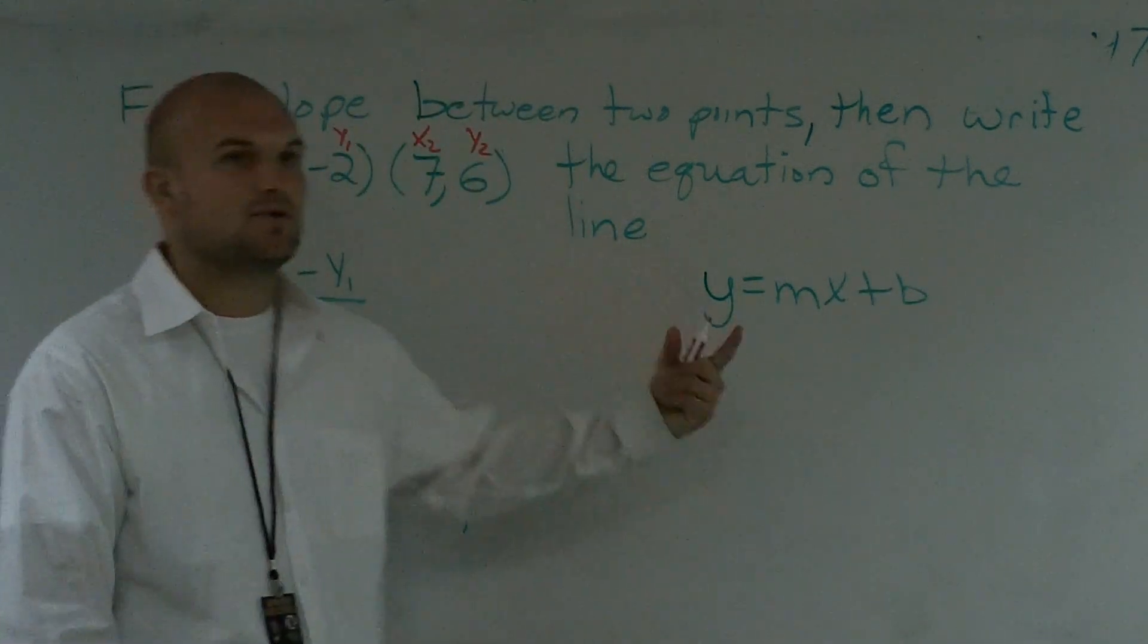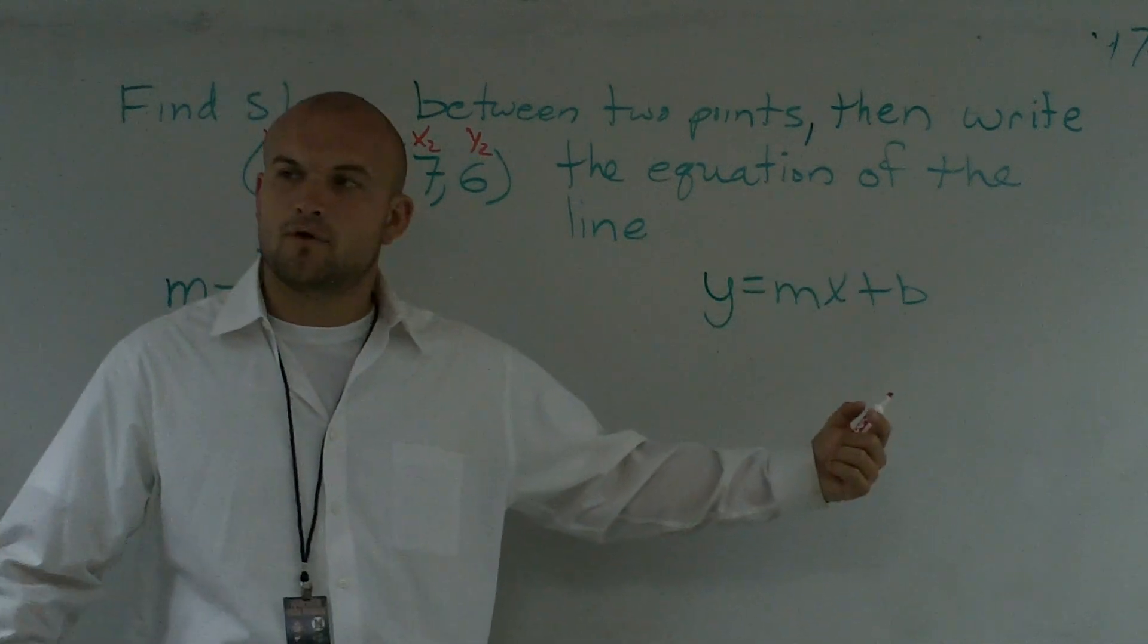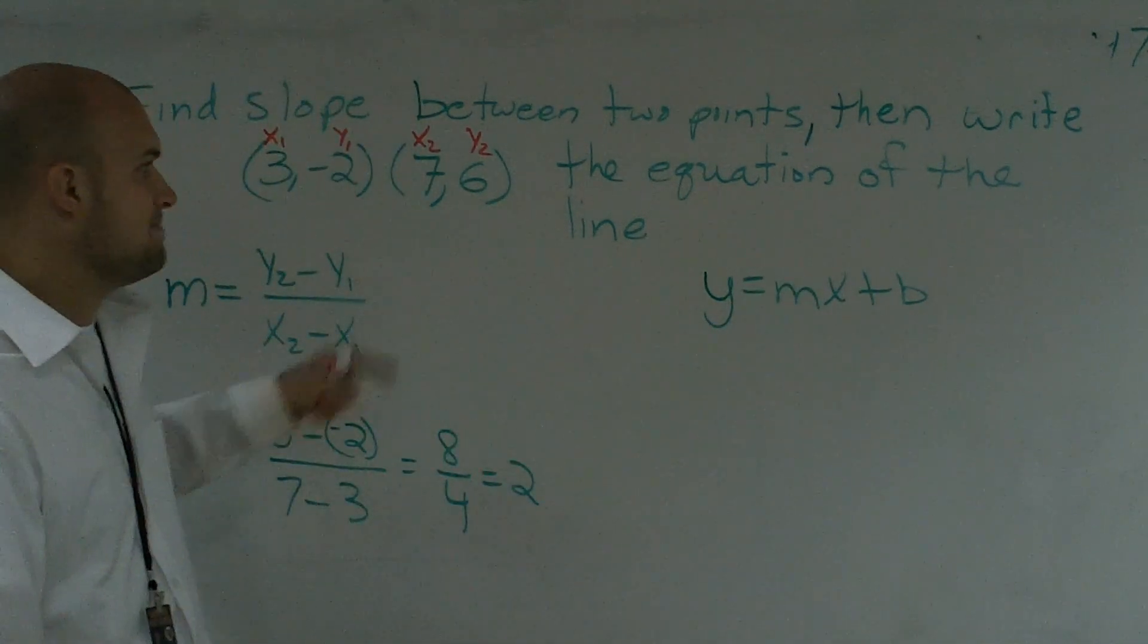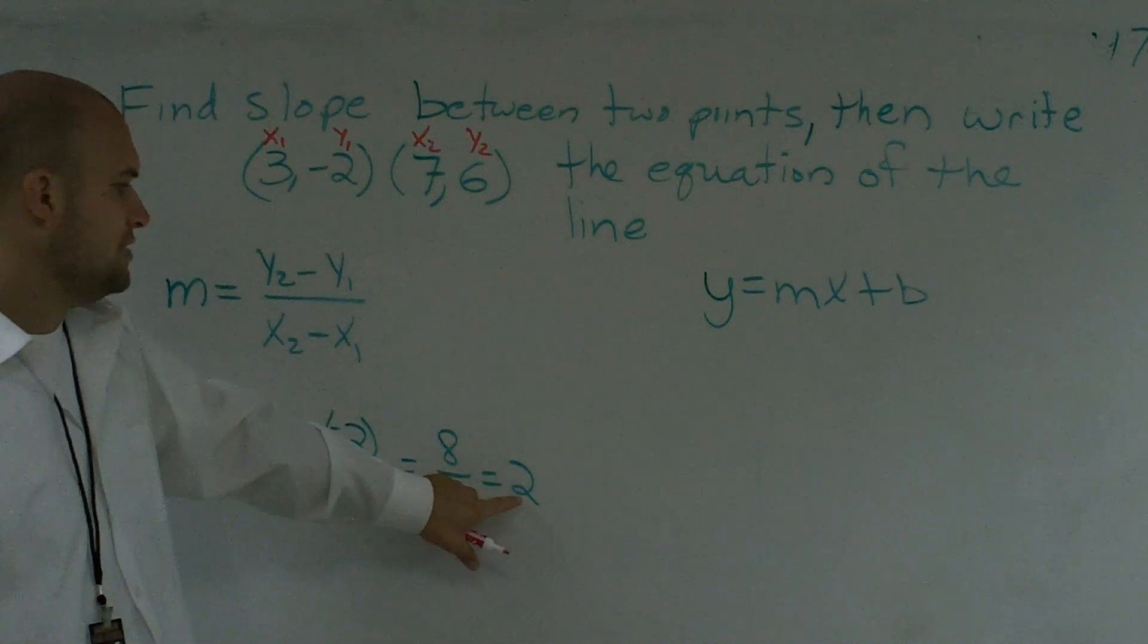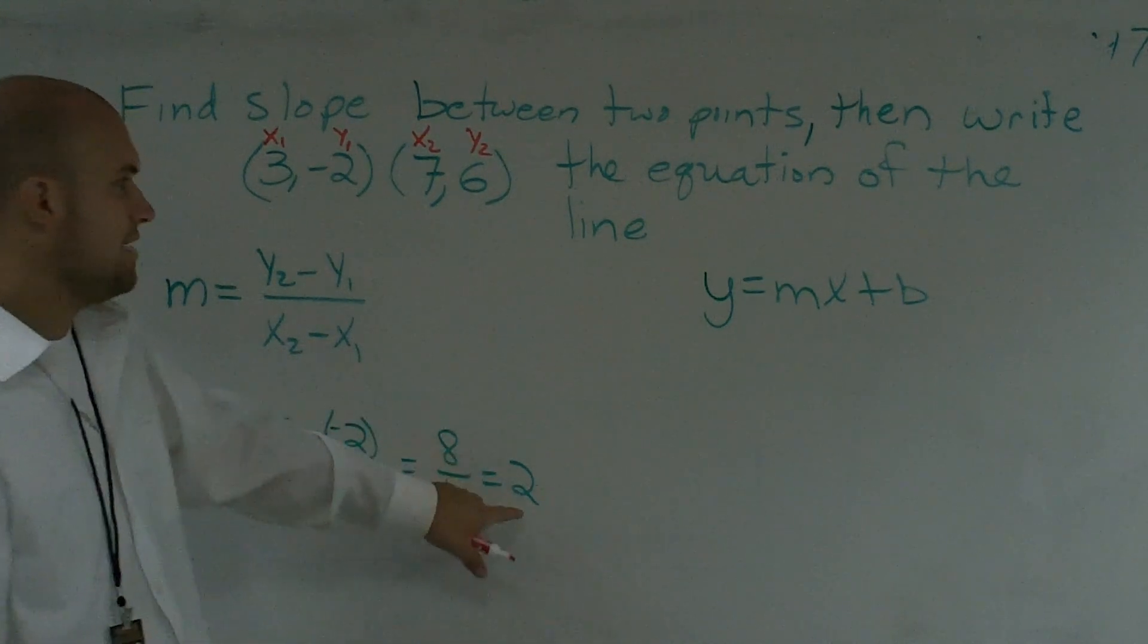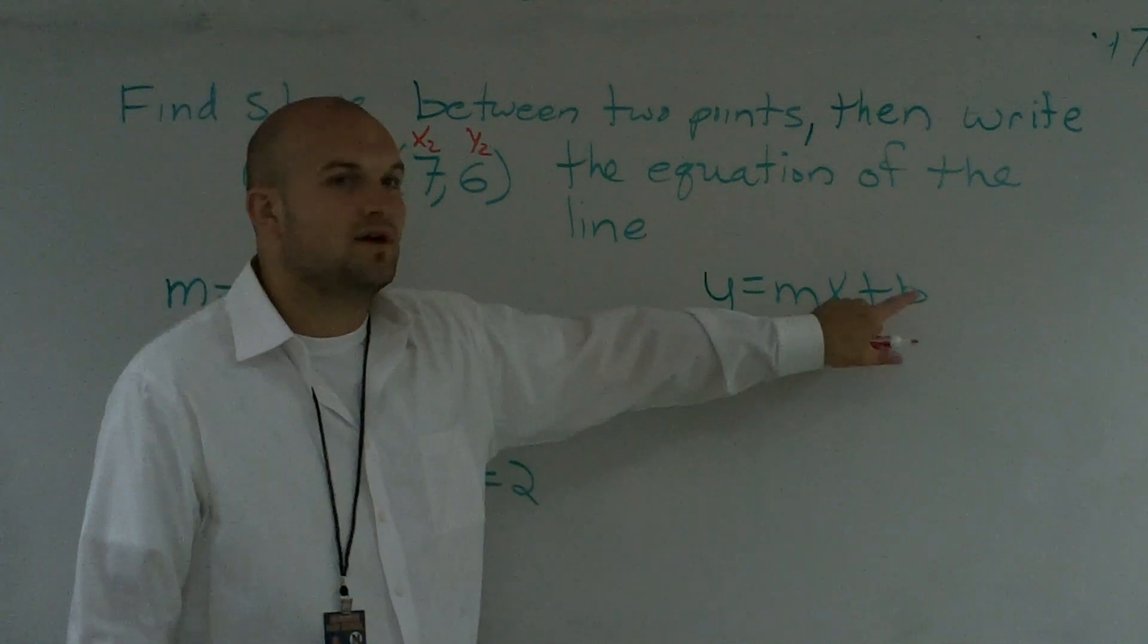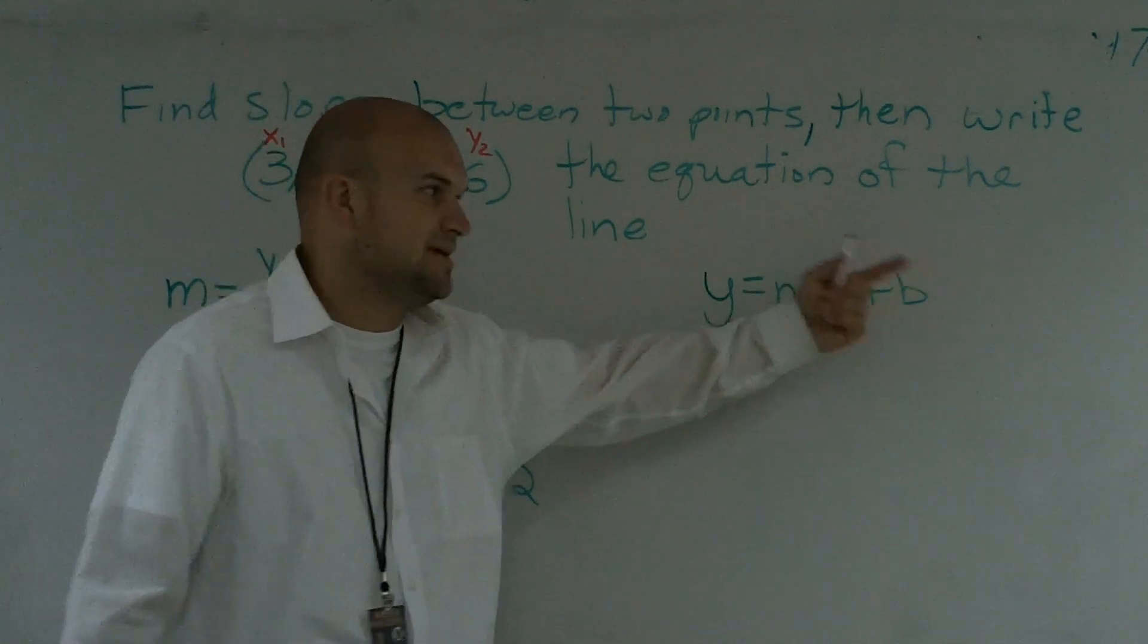So what I'm going to do is I'm going to write the equation of the line using the slope-intercept formula, or slope-intercept method. We could have also done the point-slope, but the slope-intercept method is—now I know what my slope is, my m now equals 2, and what I need to do is I need to find out what is now my y-intercept, what is my b.